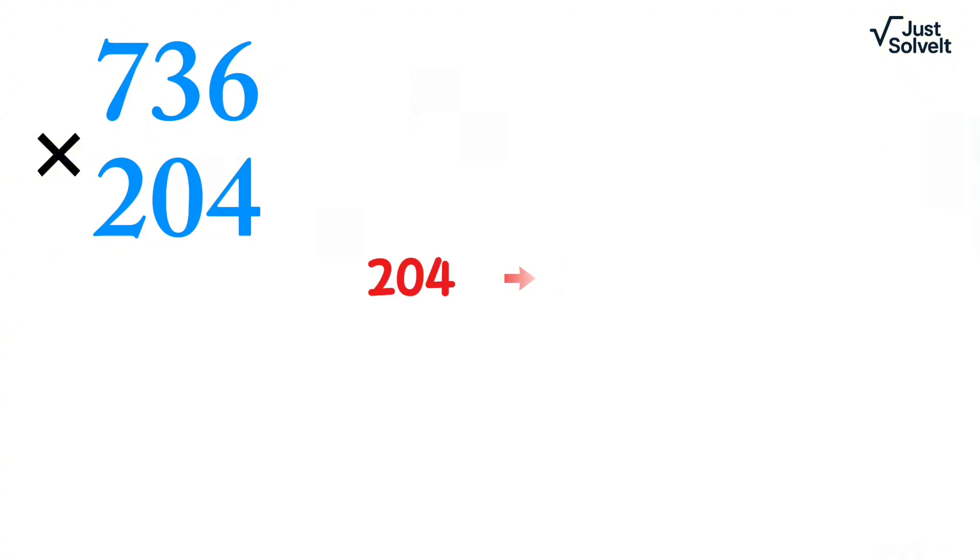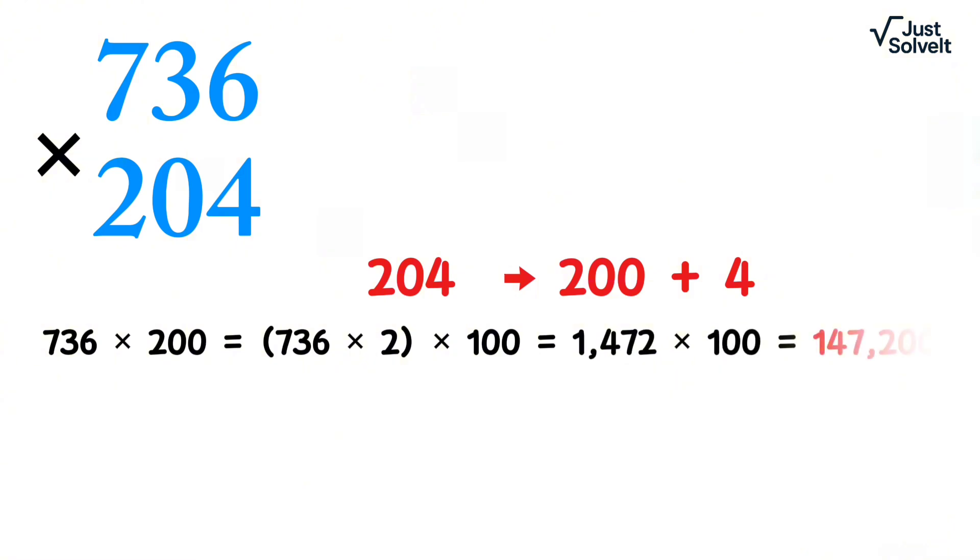Break 204 as 200 plus 4. 736 times 200 equals 736 times 2 times 100 equals 1,472 times 100 equals 147,200.